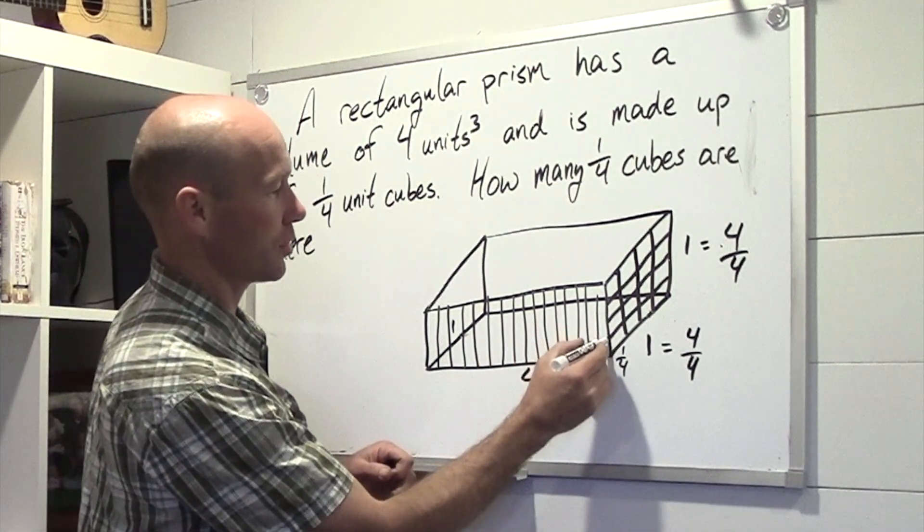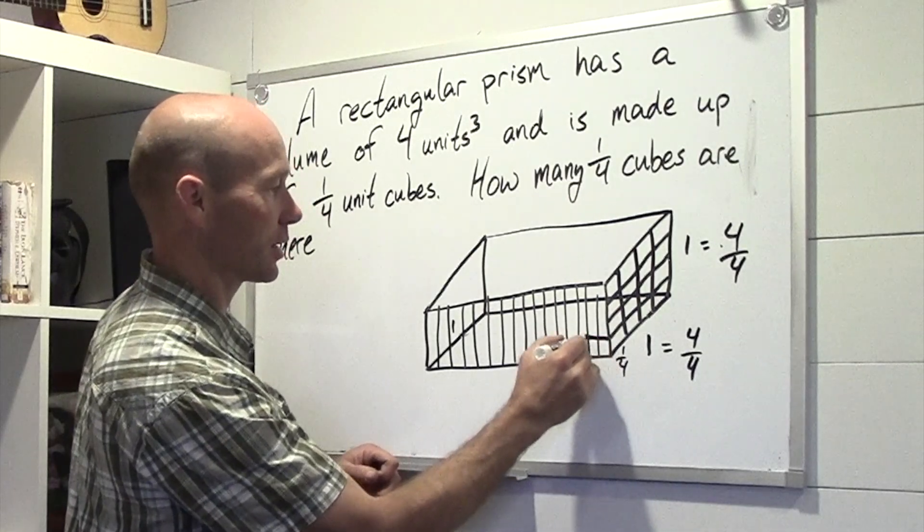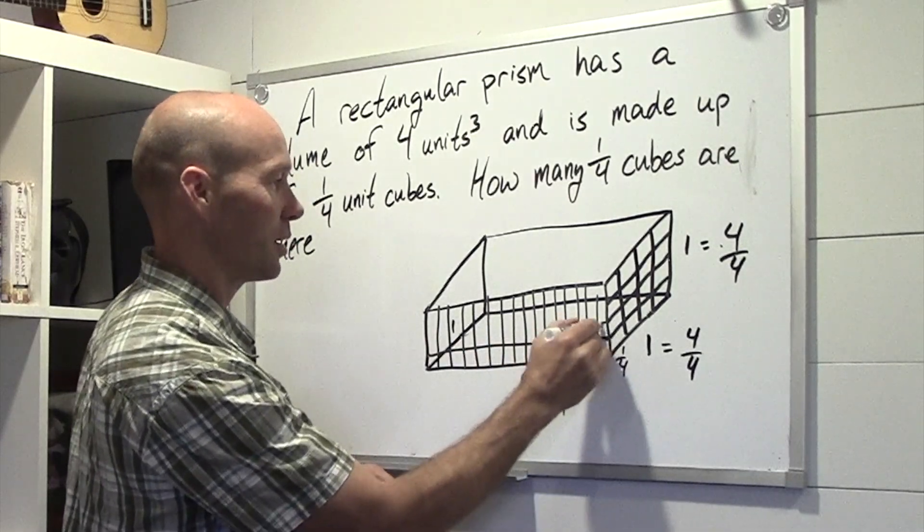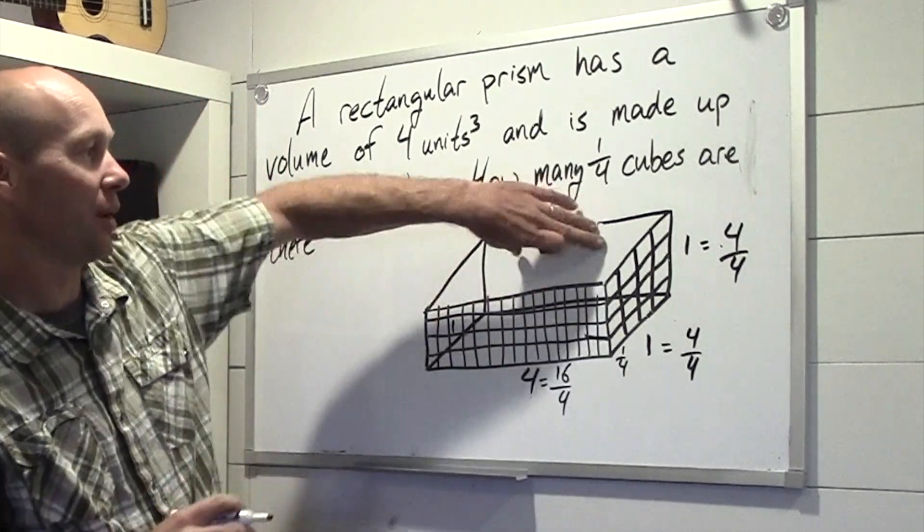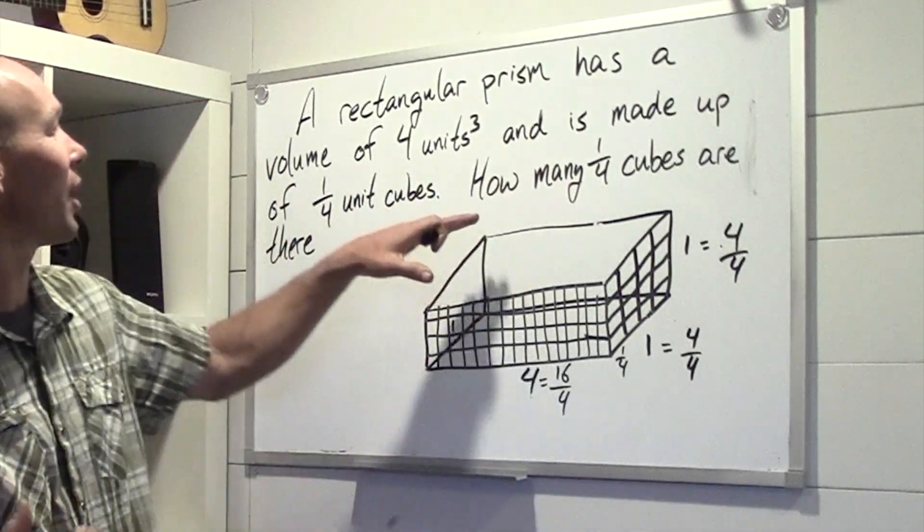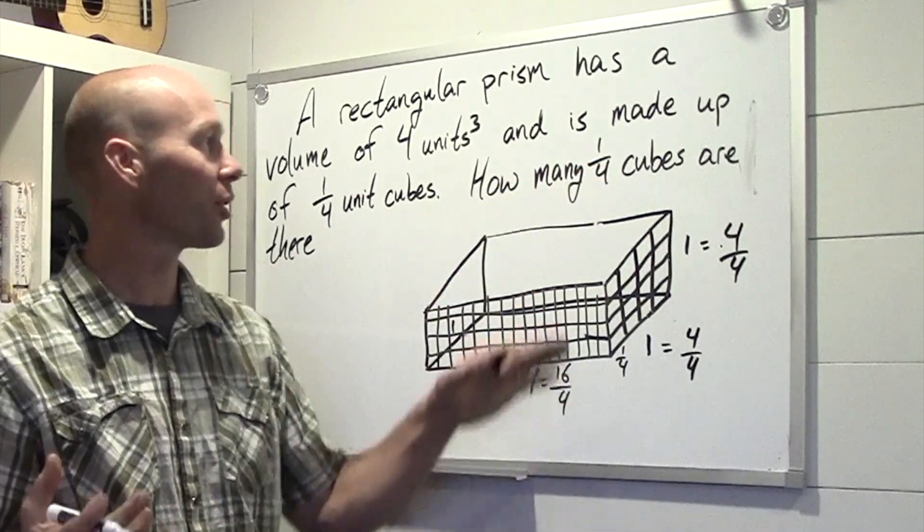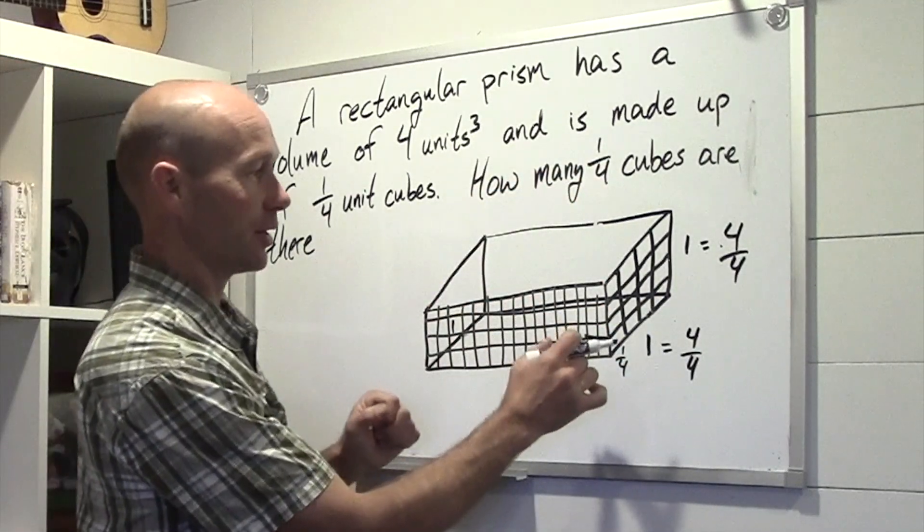And of course, we would have to make all these lines over here connect across. All of them connect across. And then we'd have to fill in the rest. But the question is now, how many 1/4th units are in this?